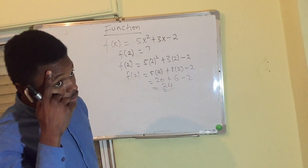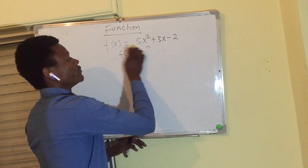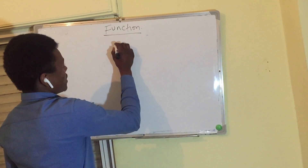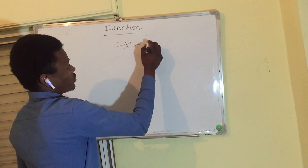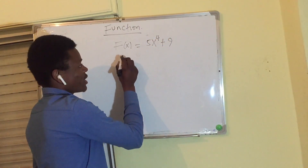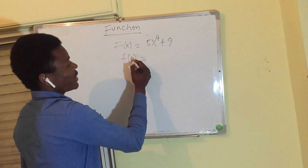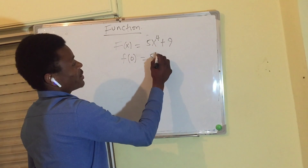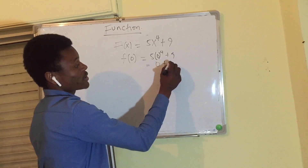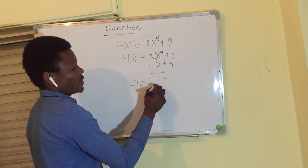So f of 2 equals 24. For another example, if f of x equals 5x to the power of 4 plus 9, and we need to find f of 0, we substitute x equals 0. So we get 5 times 0 to the power of 4 plus 9. Zero to the power of 4 is 0, so 5 times 0 is 0, plus 9. Therefore f of 0 equals 9.